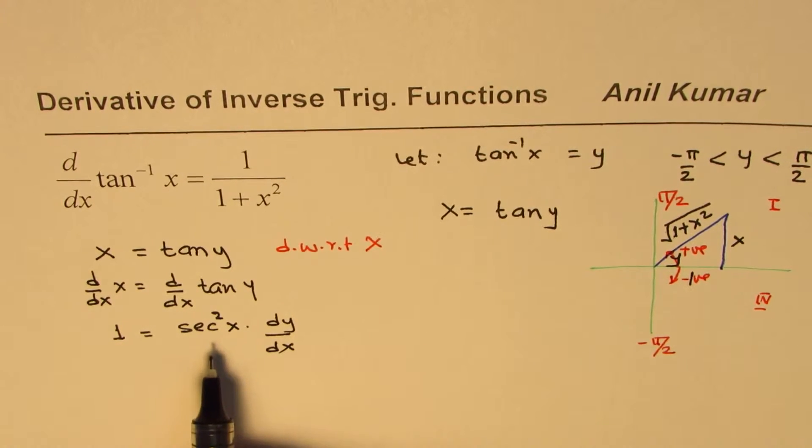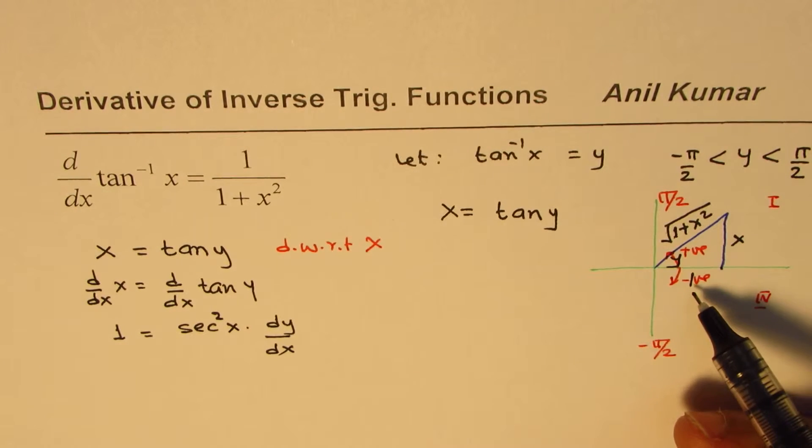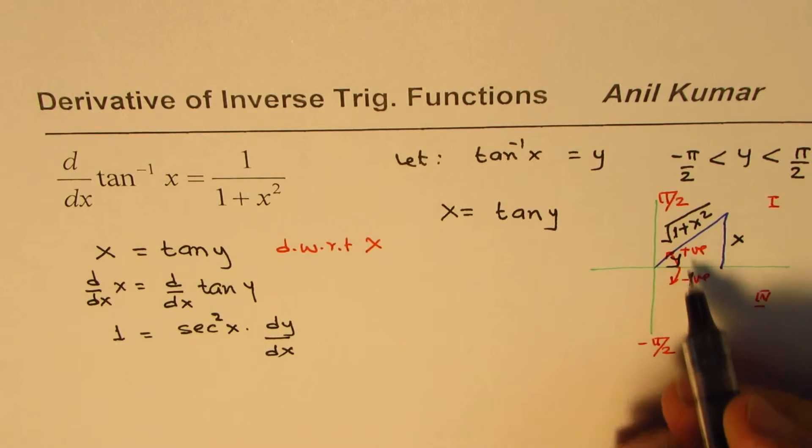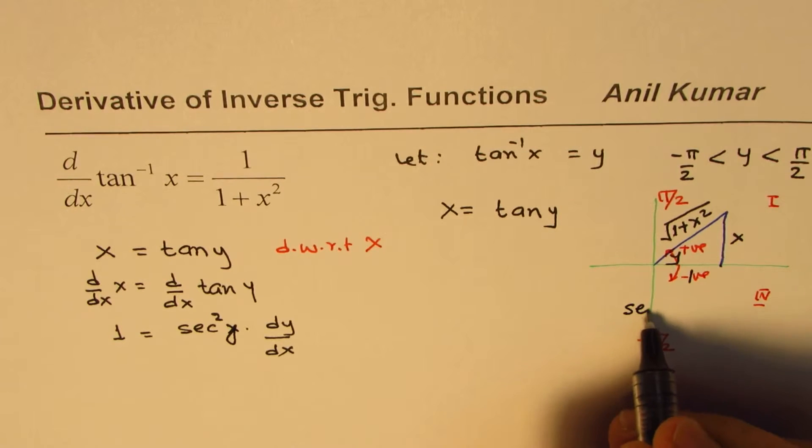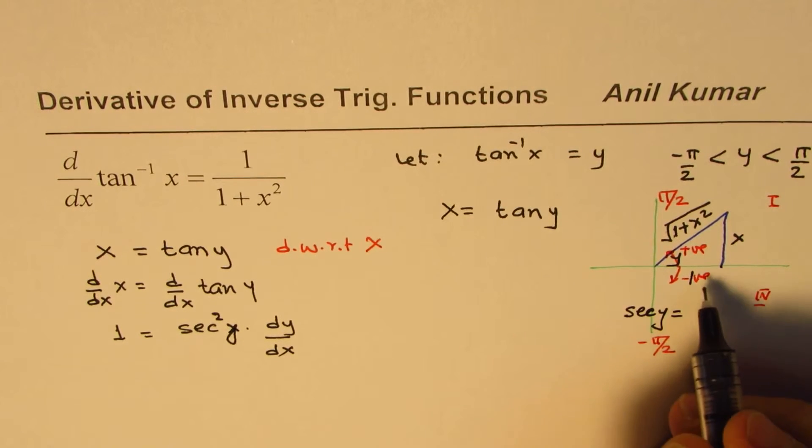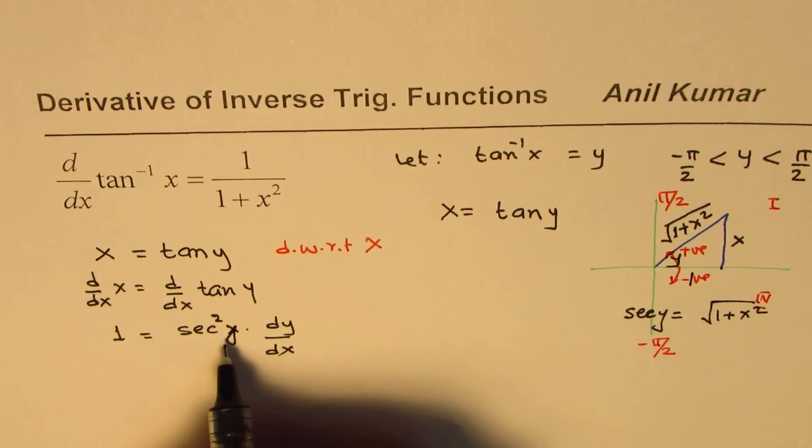Now, what is secant? Secant is ratio of hypotenuse to adjacent side. From this triangle, this angle is y, secant y is equal to this square root of 1 plus x square. That is secant y. So replacing this here...